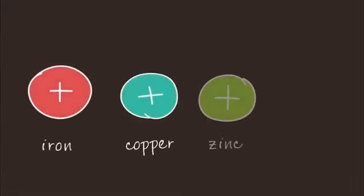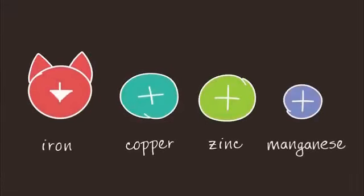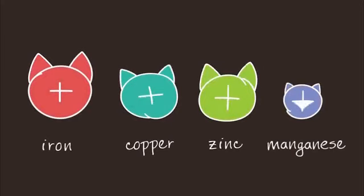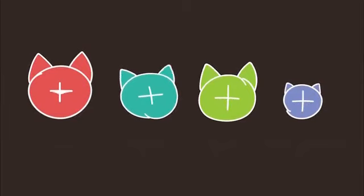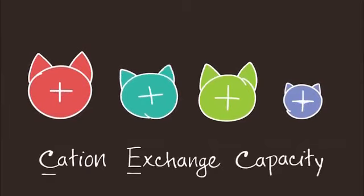Positively charged ions are referred to as cations. The measurement of a soil's ability to hold on to cations is called its cation exchange capacity.